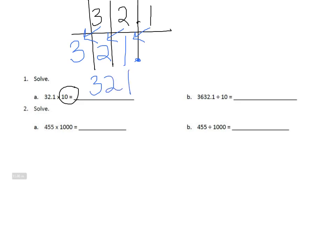As you can see, in 10, there's only one zero. In our number, our decimal place only moved one spot to the right, which made my number bigger. That's a great check to make sure that you have correctly changed the value of each digit.